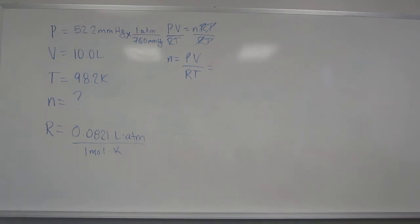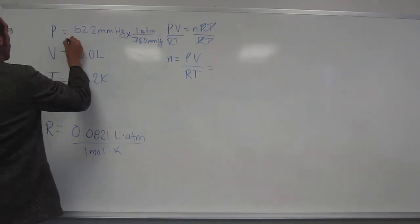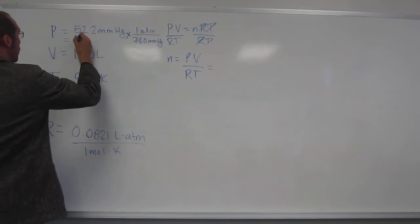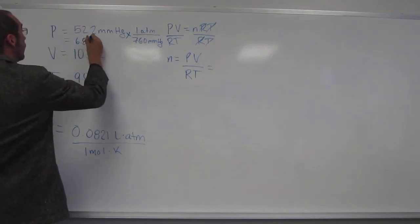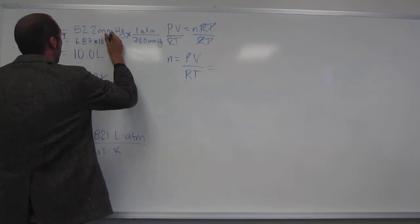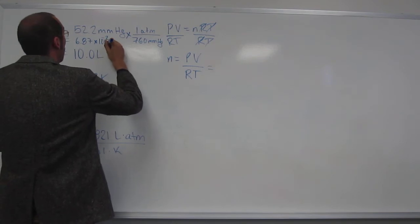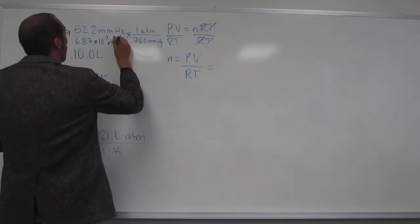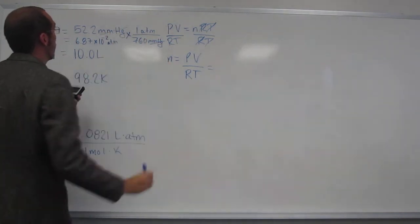enter. And, I get, I'll just do it in scientific notation. 6.87 times 10 to the negative 2 ATM. Why? Because millimeters of mercury cancel. You can look at it. Okay, so now we plug and chug, right?